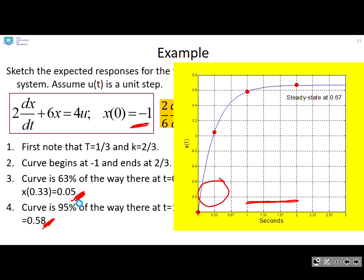So now I just put those numbers in. Where do I start? There's x(0). Where am I after one time constant? There's x(T). Where am I after three time constants? There's x(3T). And then you draw, as best as you can, a sketch between the points.